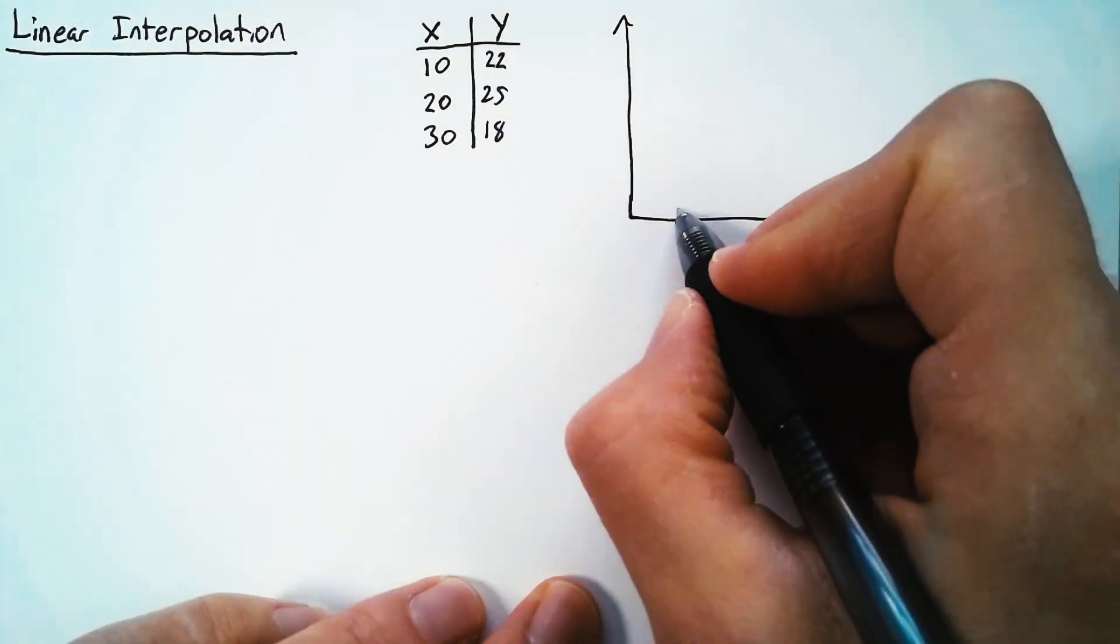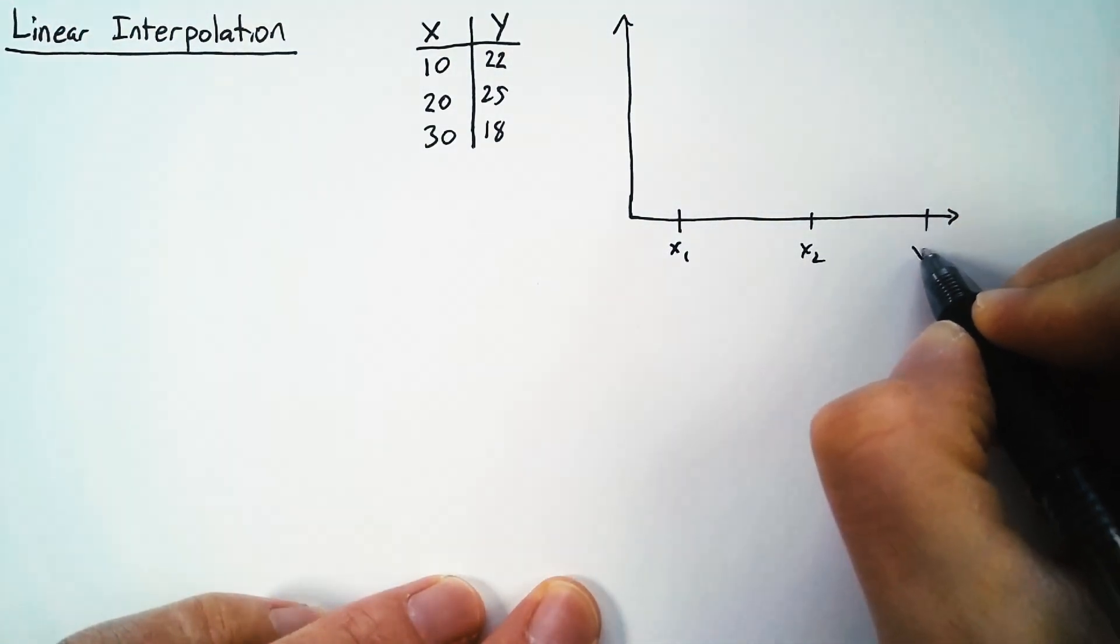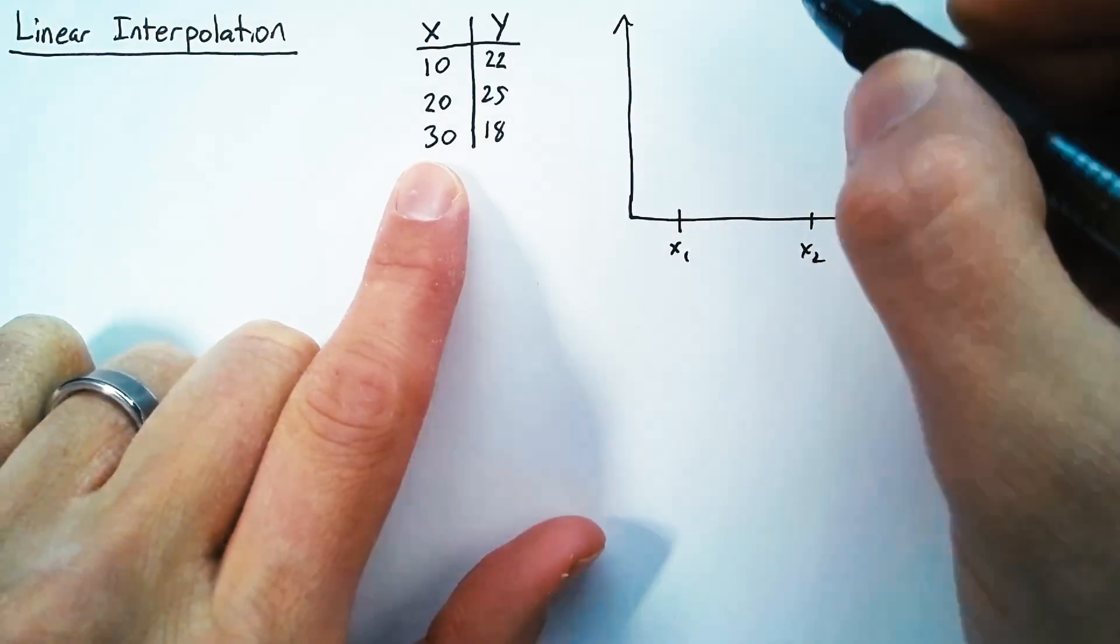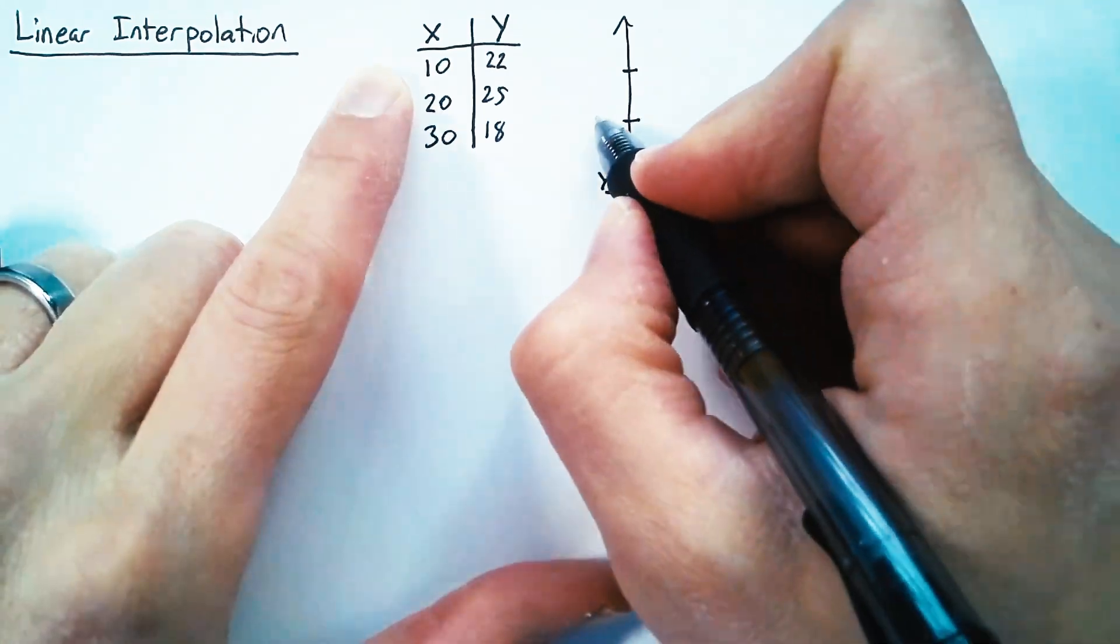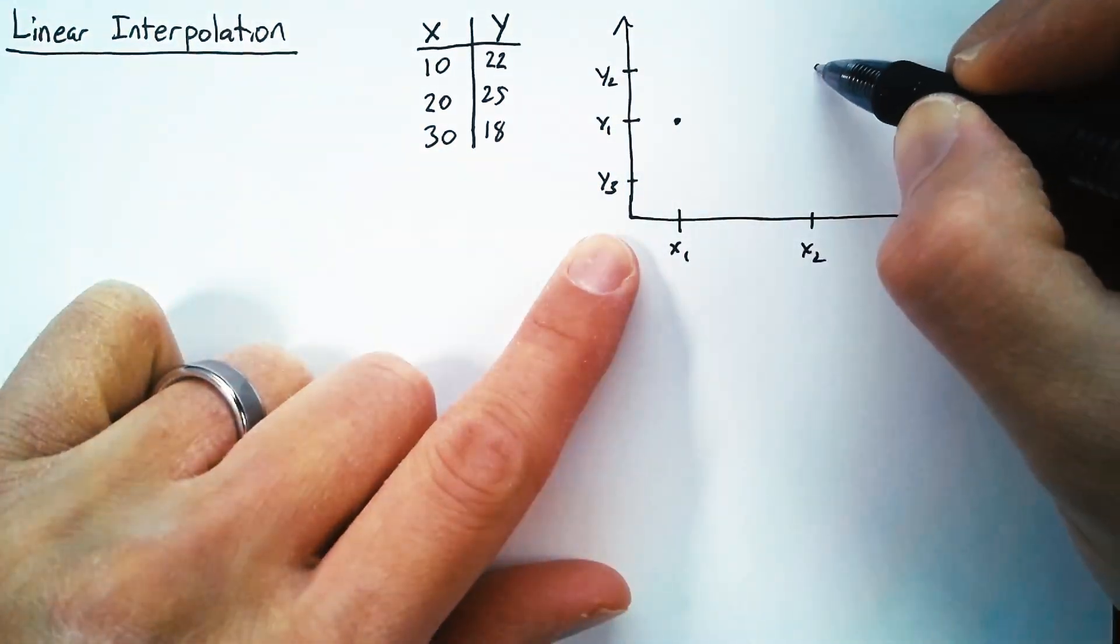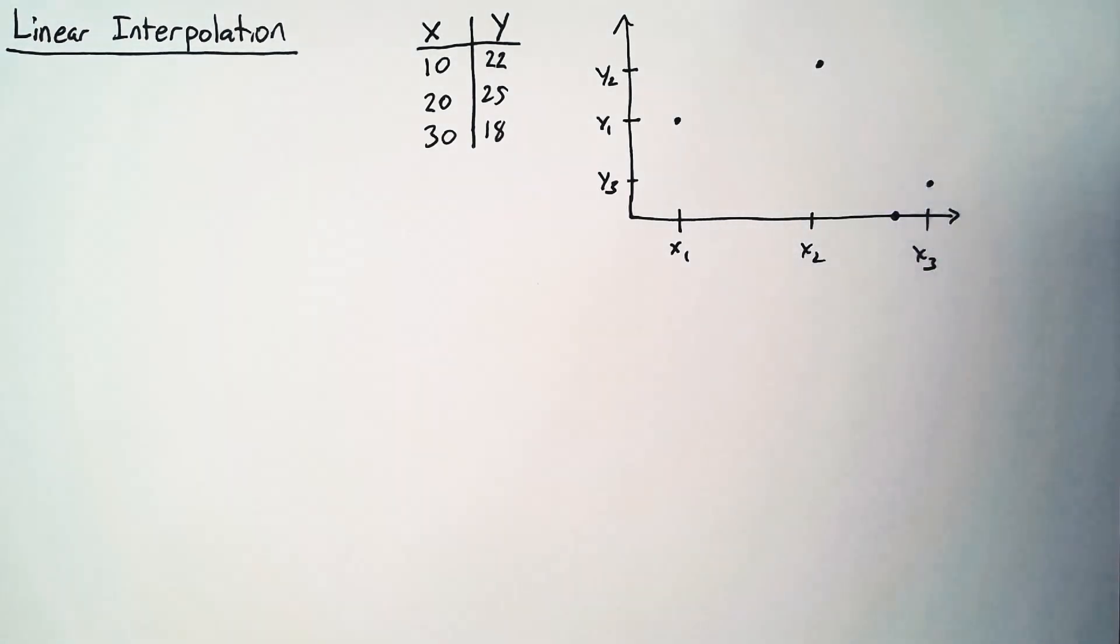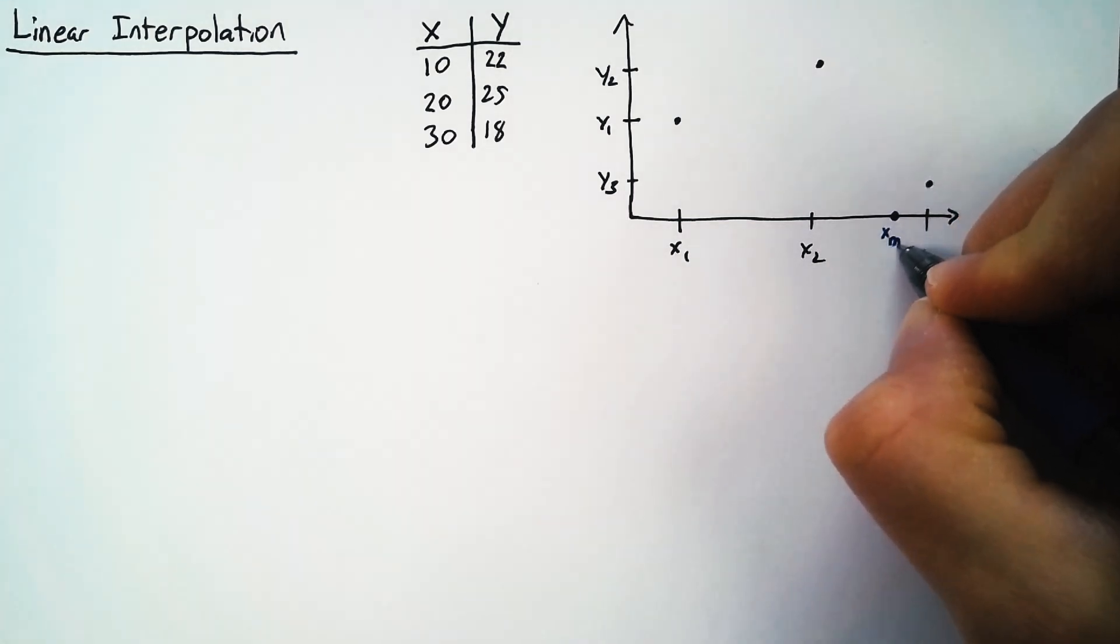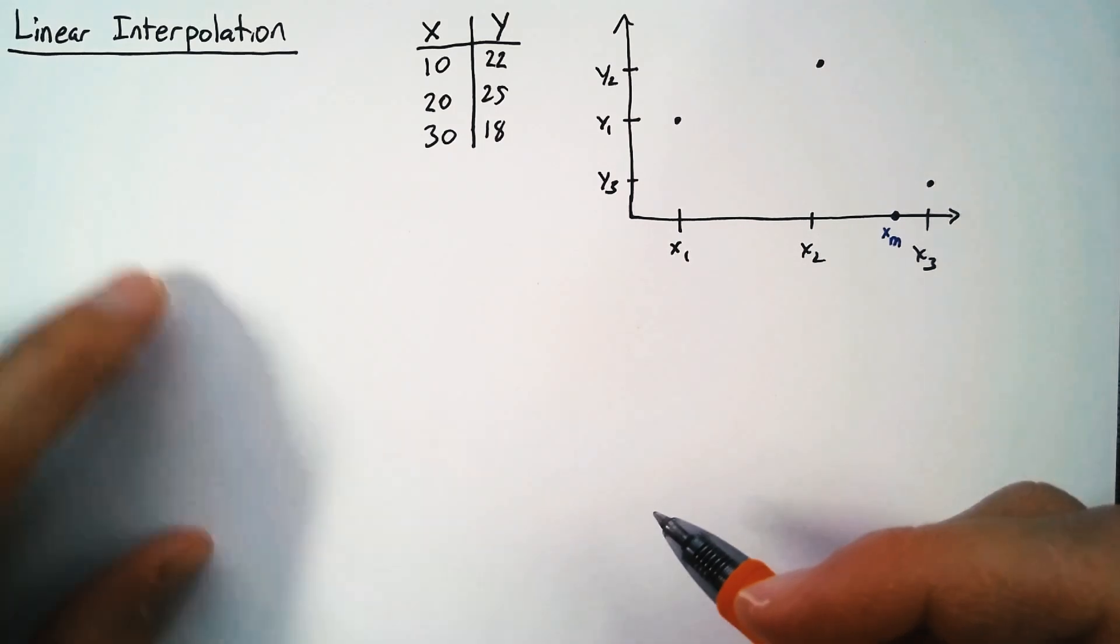So we have three x values, which I'm going to call x1, x2, and x3. And then those three x values are related with three y values. And for our little example, we were trying to figure out what was happening at x equals 27. So I'm going to label that xm, just meaning it's a middle point of x.